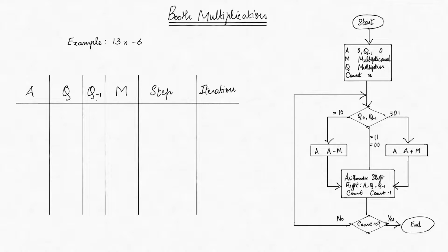Today we are going to go through an example of Booth's algorithm. It's used to multiply signed binary integers in an efficient manner. Here we have a diagram of the algorithm. You can notice the steps in box shapes and the conditions in diamond shapes.